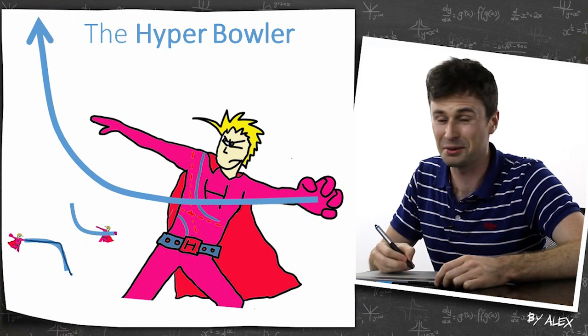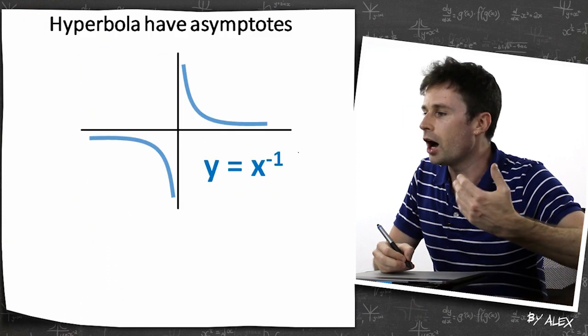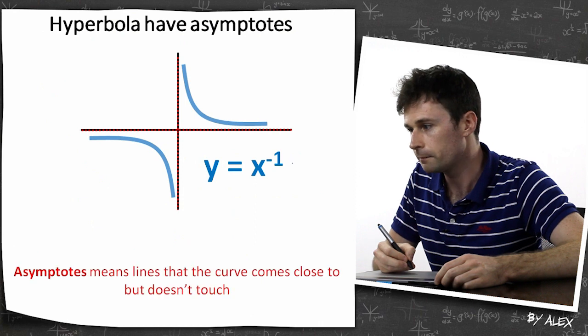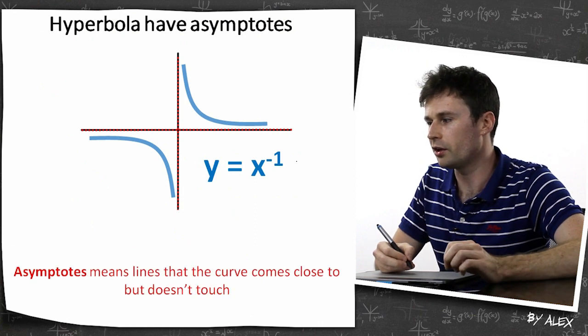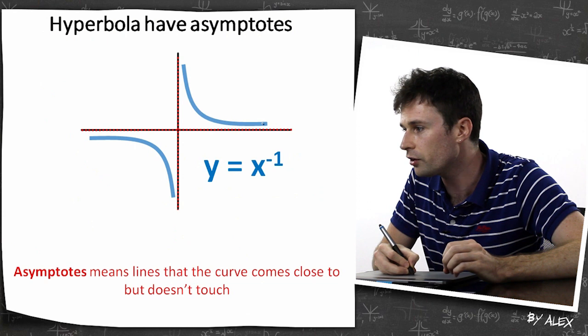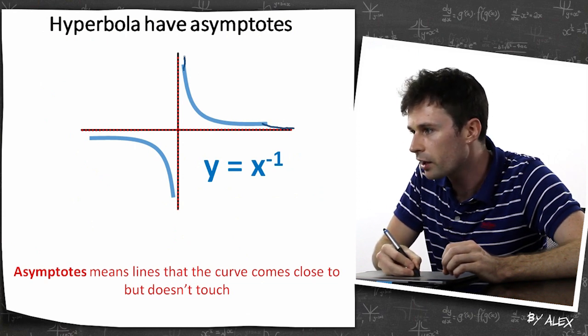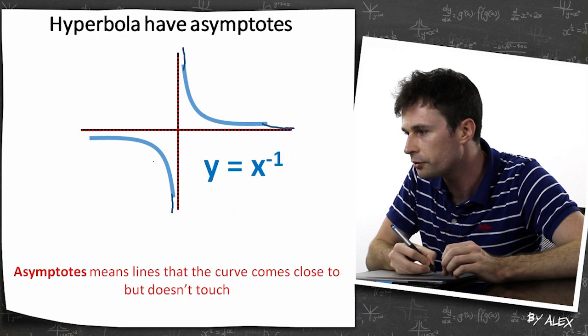So that's maybe a way you can remember it. So hyperbola have asymptotes. That's these red line thingies. And asymptotes means lines that the curve comes close to but doesn't touch. And you can see it sort of comes closer and closer and closer, but never actually touches them. And it does that all along these four different directions.